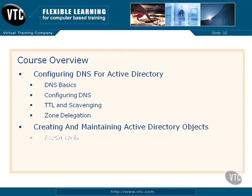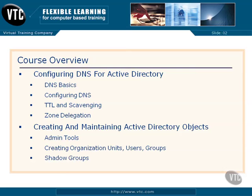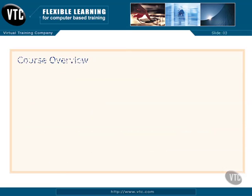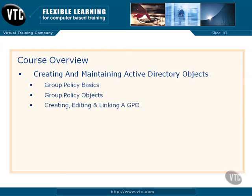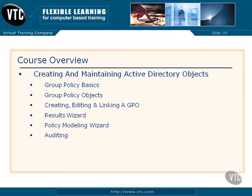Creating and maintaining Active Directory objects is the next section. We'll talk about some admin tools and show you a trick there. Then we'll cover creating organizational units, users, groups, and shadow groups — a term you may have never heard of. We'll also cover group policy basics, group policy objects, creating and editing and linking a GPO, the Results Wizard, and the Policy Modeling Wizard — two really cool tools.